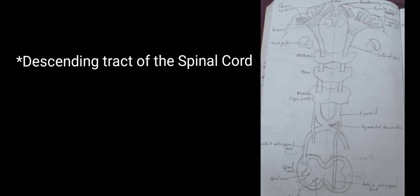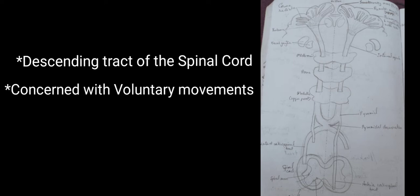Hello, today we'll look into the pyramidal tract. These are descending tracts of the spinal cord concerned with voluntary movements. The pyramidal tract fibers run from cerebral cortex to spinal cord, hence also called corticospinal tract.